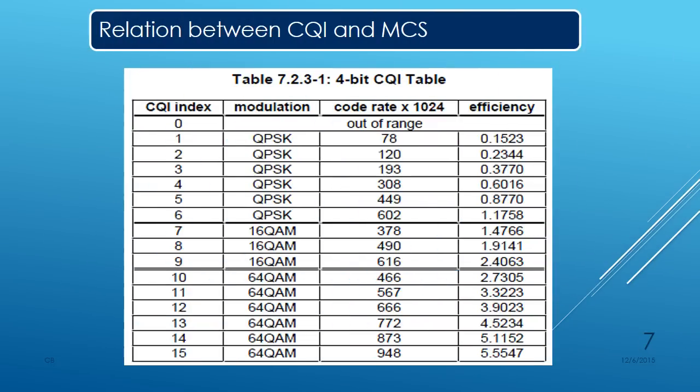The relationship between CQI and MCS: if the CQI value lies between 1 and 6, QPSK modulation is selected. If CQI value lies between 7 and 9, 16 QAM modulation is selected. And if CQI value is 10 and above, 64 QAM can be selected.